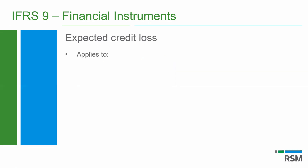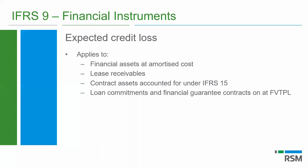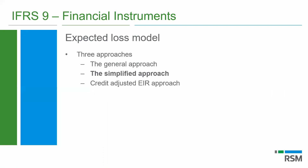The expected loss model applies to any financial assets at amortized cost, lease receivables, contract assets accounted for under IFRS 15, and any loan commitments and financial guarantee contracts not at fair value through profit and loss. There are three expected loss models available: the general approach, the simplified approach, and the credit-adjusted effective interest rate approach. The one I've highlighted is the simplified approach because that is the one we're going to be focusing on — it is the one that is applicable and mandatory to trade receivables.